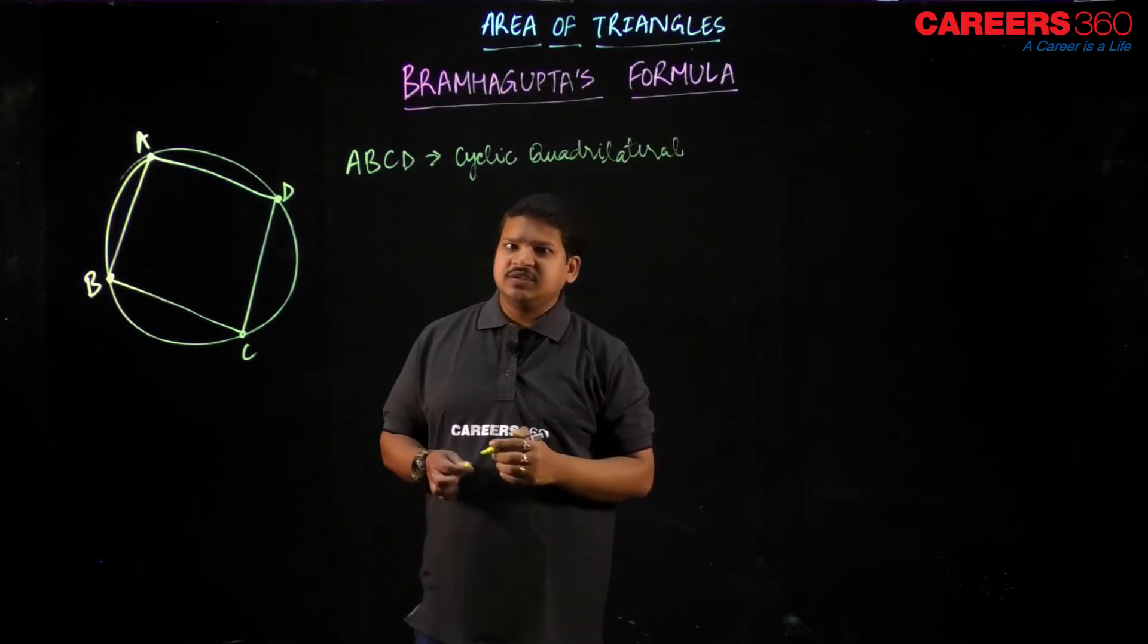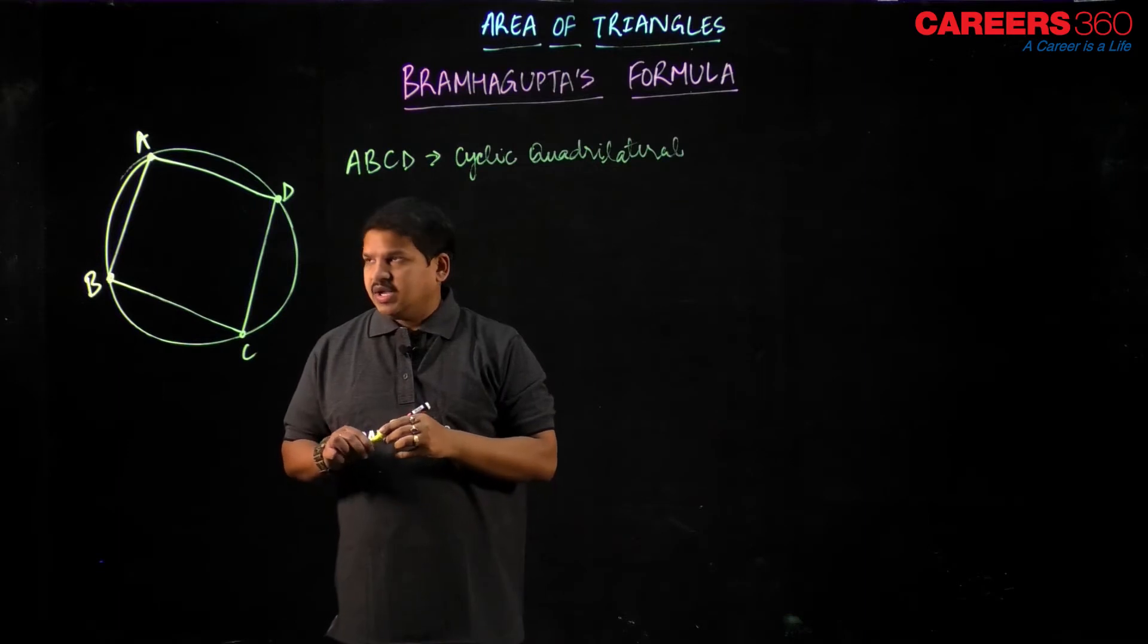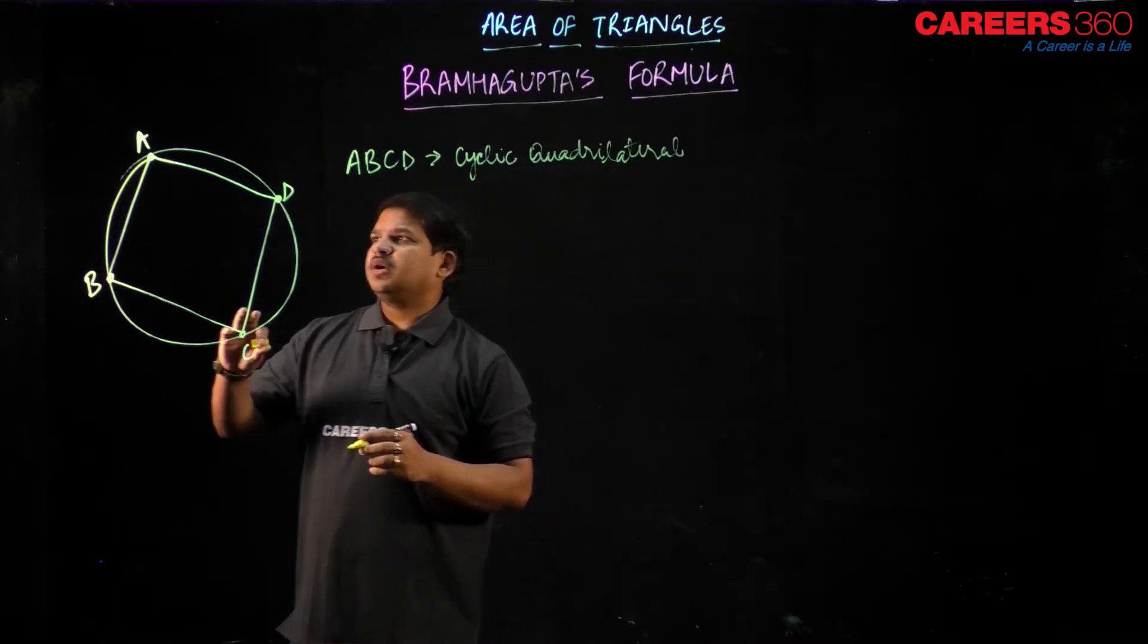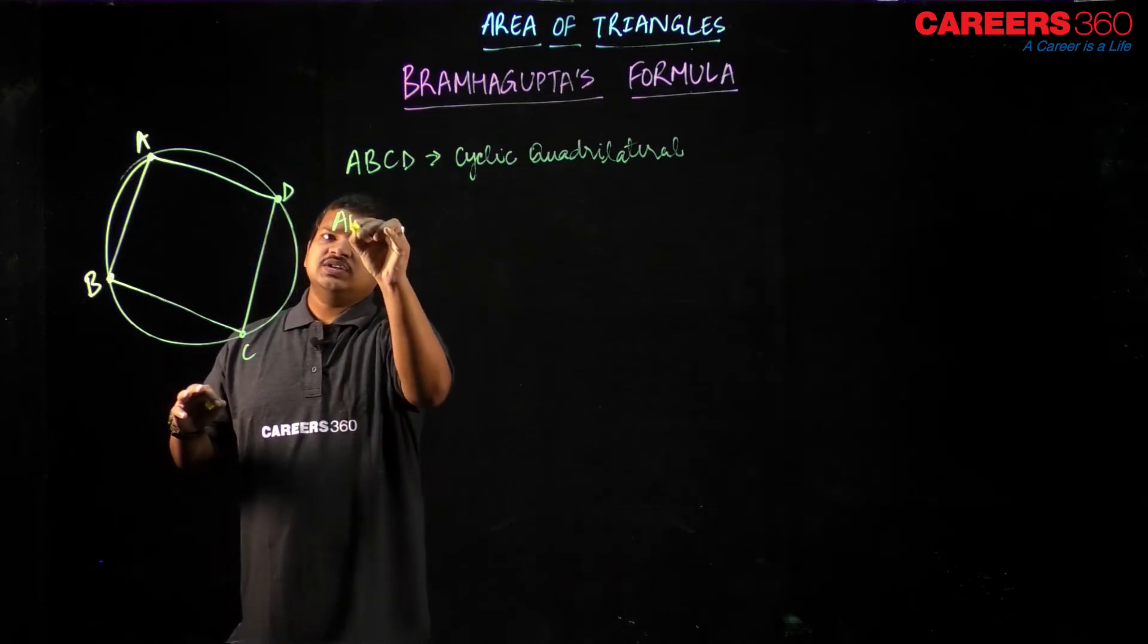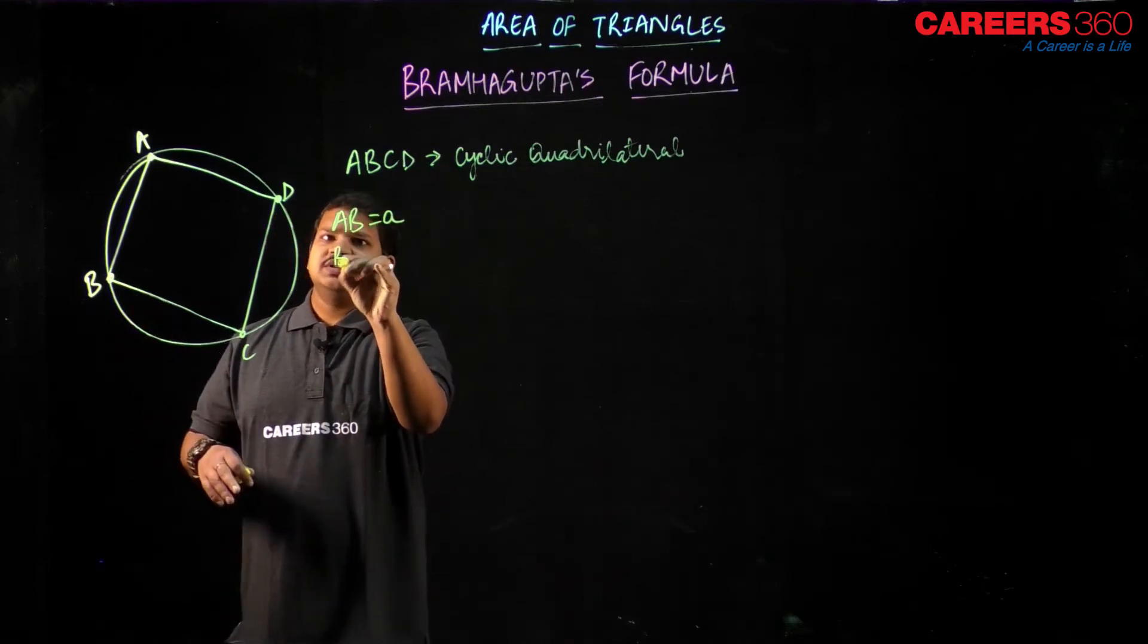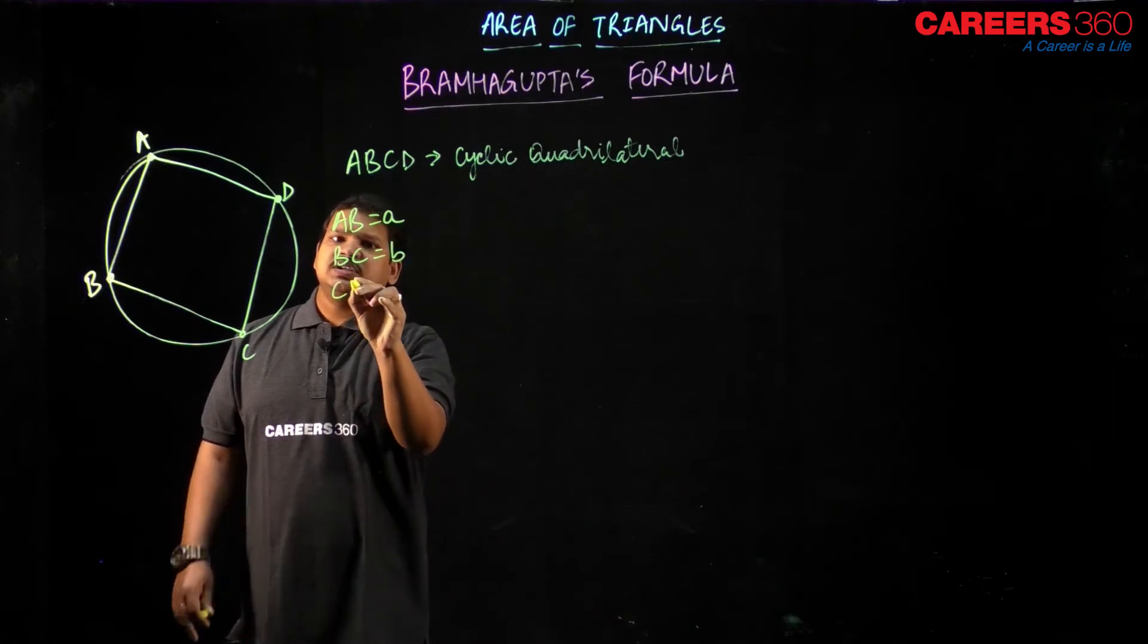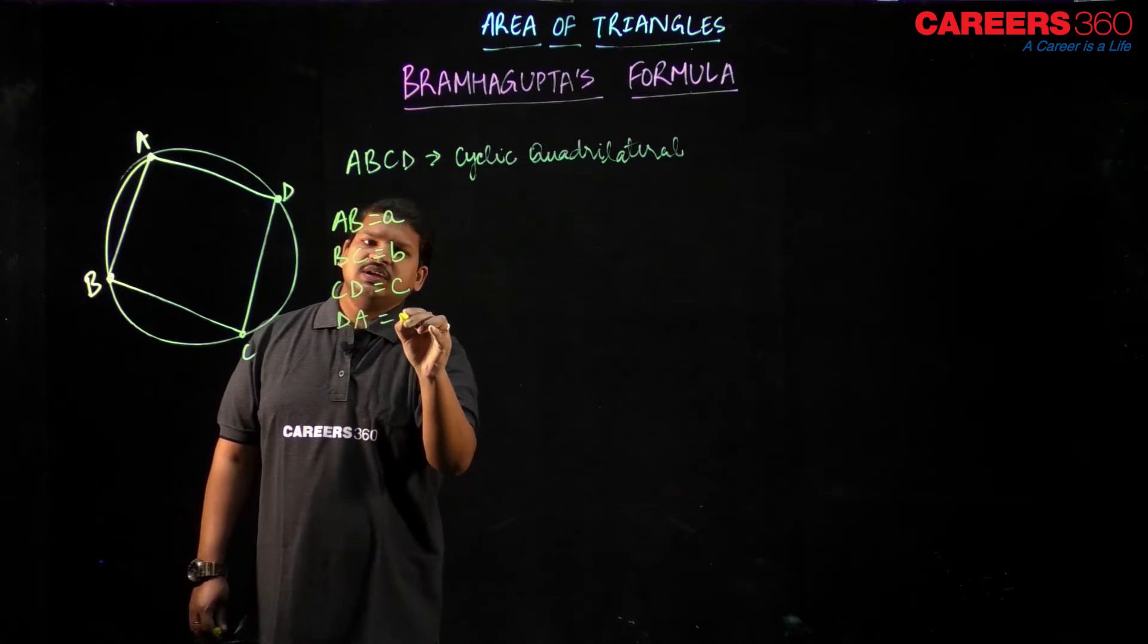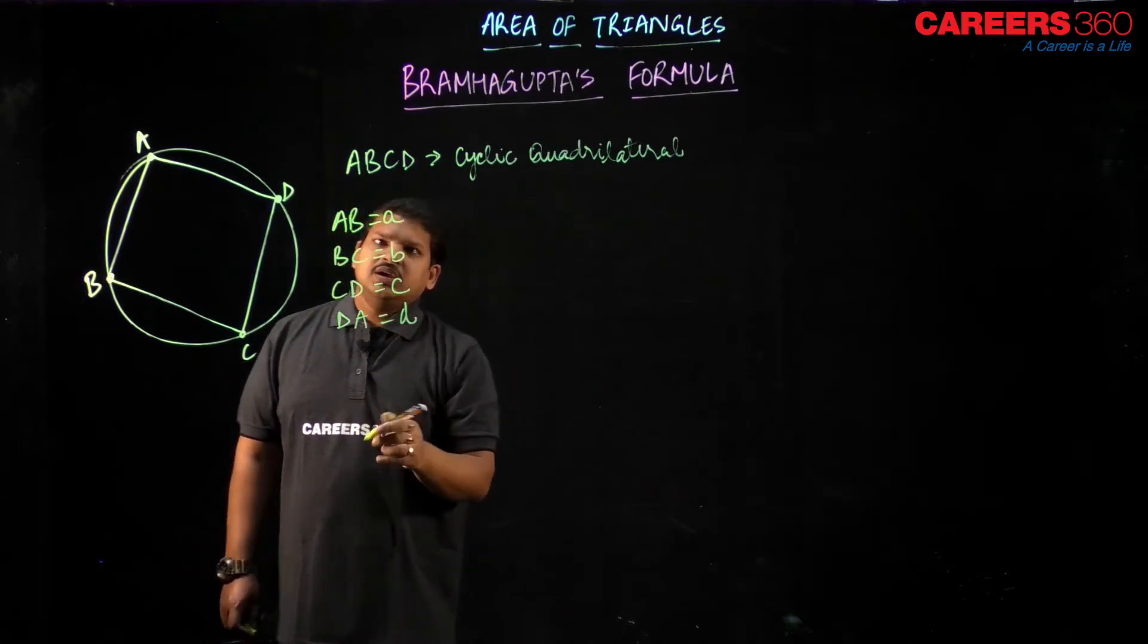ABCD is a cyclic quadrilateral. If ABCD is a cyclic quadrilateral, let us assume AB as a, then BC as b, CD as c, and DA as d.